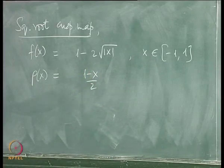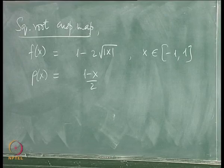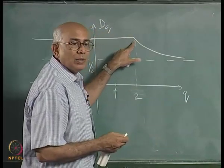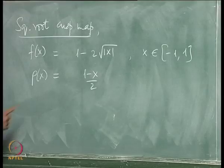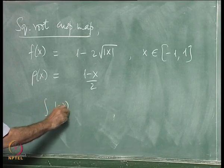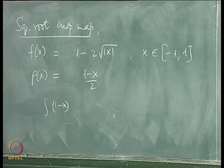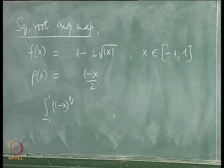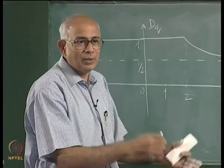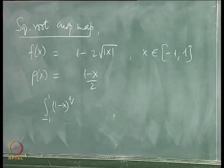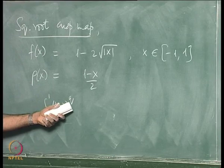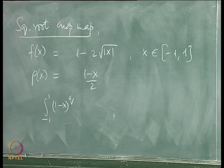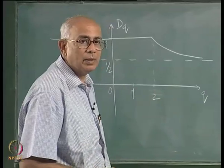The density piles up near the left-hand side and tapers off to zero at x = +1. One expects a phase transition at some value of q, because we need to evaluate ∫_{-1}^{1} ρ(x)^q dx. For negative q, if q < −1, the integrand diverges since (1−x)^q diverges at x = −1 (dx/(1−x) is logarithmically divergent and any higher power diverges). So we expect a transition at q = −1.